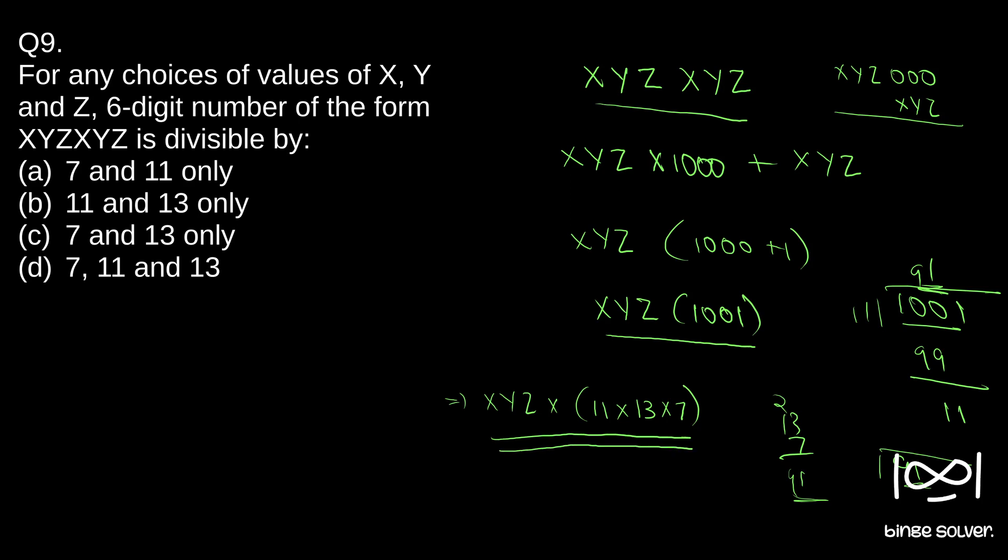So no matter what value X, Y, Z takes, this number will be divisible by eleven, thirteen, and seven. Since this number is nothing but XYZ into eleven into thirteen into seven. So for this question, six-digit number of the form is divisible by seven, eleven, and thirteen. So the solution is D.